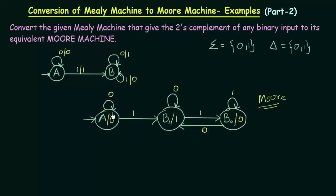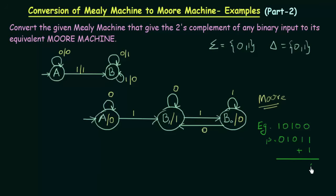Let us see if this is working by taking an example. Let's find the 2's complement of the number 10100. First we convert to 1's complement by flipping the bits: 01011, then add 1 to get 01100. So 01100 is the 2's complement of 10100. Let us pass this string to our Mealy machine and also to our Moore machine and verify we get the correct 2's complement.